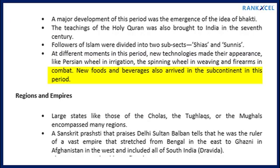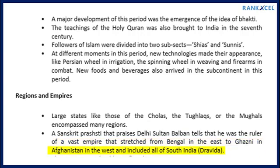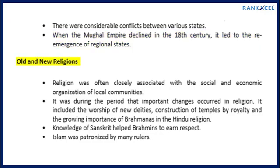New foods and beverages also arrived in the subcontinent during this period. Large states like those of the Cholas, the Tughlaqs, or the Mughals encompassed many regions. A Sanskrit prashasti that praises Delhi Sultan Balban tells that he was the ruler of a vast empire stretching from Bengal in the east to Ghazni in Afghanistan in the west, including all of south India (Dravida). When the Mughal Empire declined in the 18th century, it led to the re-emergence of regional states.